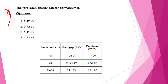The answer is Option B, which is 0.72 electron-volt. If the number of valence electrons in the atom is more than 4, I will use gallium arsenide. The answer for this is 0.72 electron-volt.